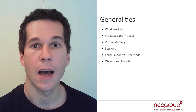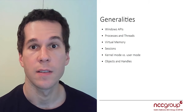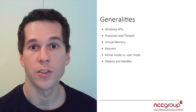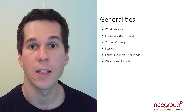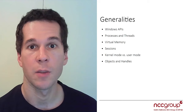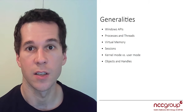We're going to understand how the different objects are in memory. When we talk about objects, they are not actually C++ objects — they are structures, but that's how they name them. They call them objects. So we have objects like processes and threads executing in memory. We'll also see how virtual memory works to understand how each process manages its own memory in userland and how memory is managed in kernel land. Finally, we'll see what the different sessions are and how they manage different processes into sessions.